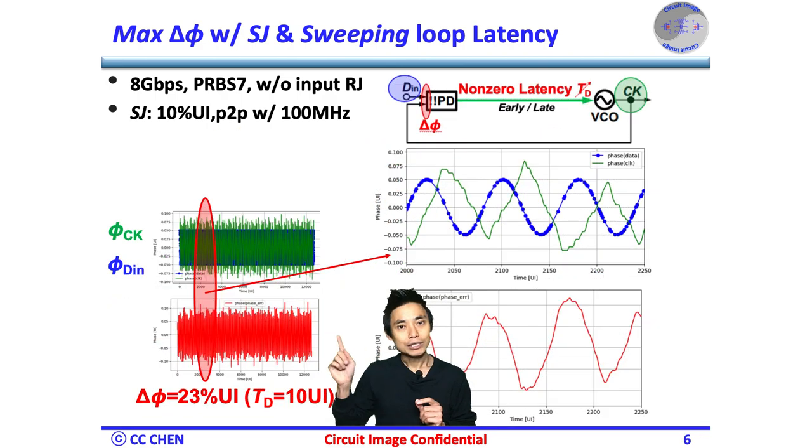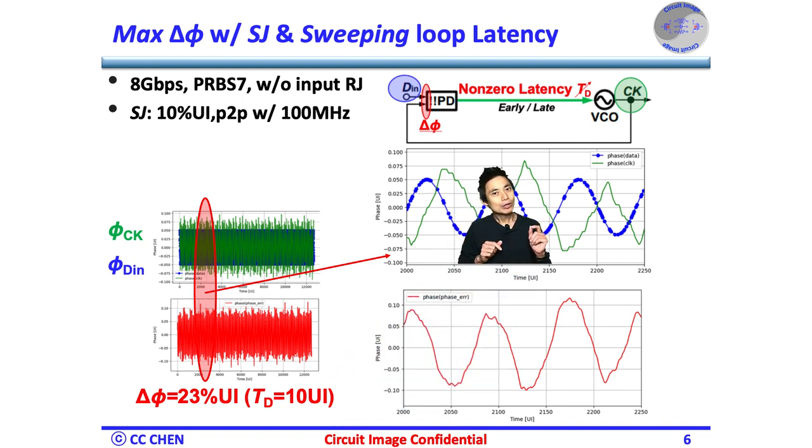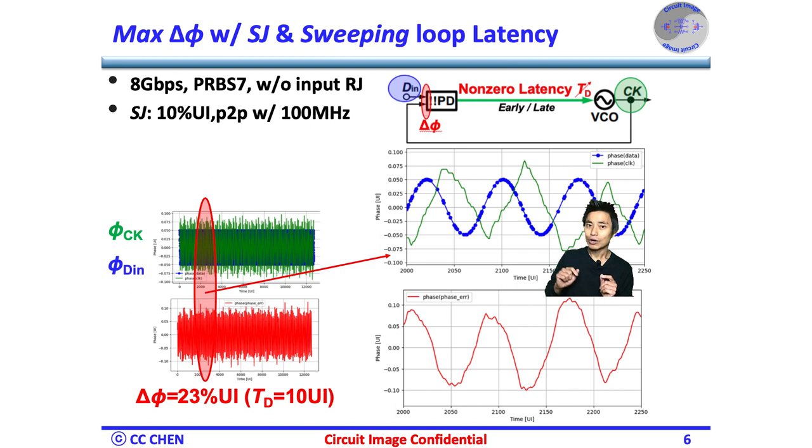Right, if we look around 2000 to 2200 bits, the phase movements of the clock are almost out of phase of the input phase. For example, the positive peak phase of the clock is almost the negative peak phase of the input data and vice versa. Therefore, the phase error would be twice the phase movement of the input data due to the 10 UI delay.